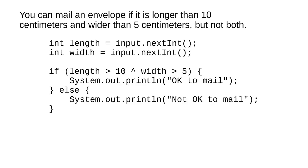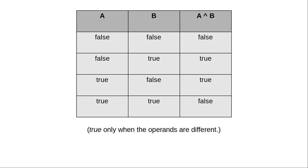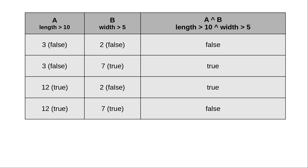Here's the code for that in Java, using the circumflex for the operation whose official name is exclusive OR. Here is its truth table. The result is true only when the operands are different. And here's the example with the envelope length and width.